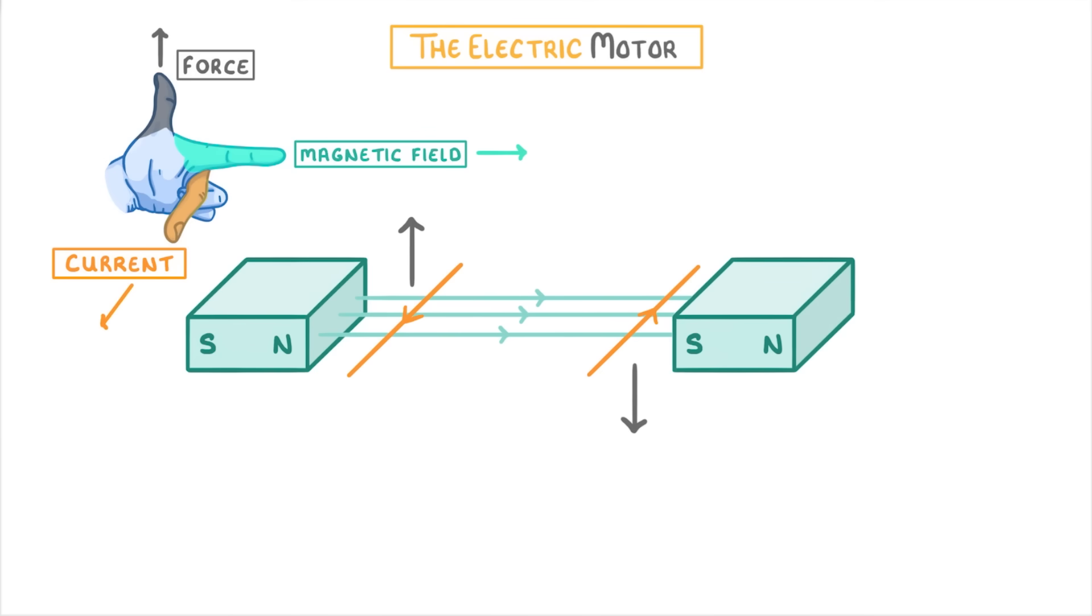Now imagine instead that the two wires are connected at the far end, so we effectively have a coil, with the current flowing in from the positive terminal on the right, going all the way around the coil, and flowing out to the negative terminal on the left.